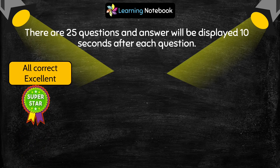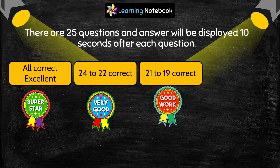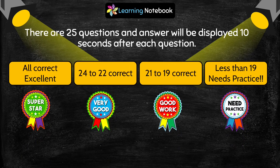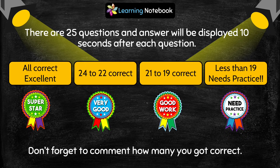There are 25 questions in this quiz and the answer will be displayed 10 seconds after each question. If all your answers are correct it means you are excellent. If you score from 22 to 24 it means you are very good. If your score is from 19 to 21 it means you have done good work, but if you score less than 19 it means you need practice.